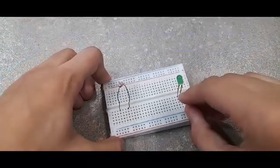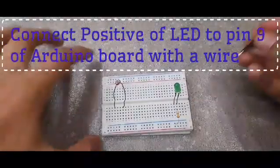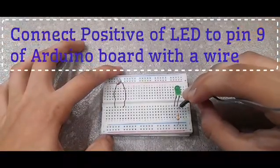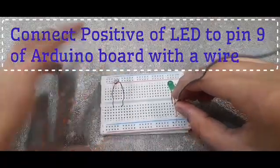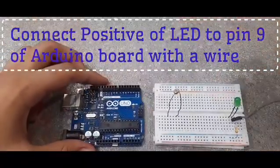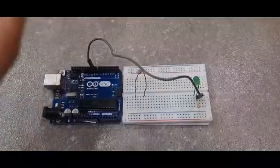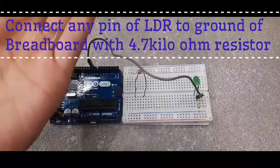Then you will take another wire and connect one end to the positive of LED, and the other end will go to pin number 9 of breadboard. Next, you will take your 4.7 kilo ohm resistor and connect one end to any pin of the LDR, and the other end will go to the negative of breadboard.